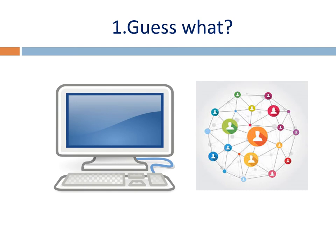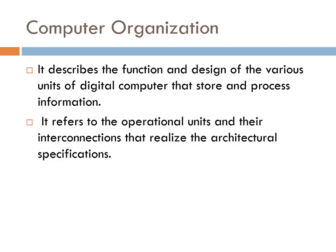Can you guess this? This is a computer and here is like an organization — this picture indicates an organization. So this is computer organization. Computer organization describes the function and design of various units of a digital computer that store and process information. It refers to the operational units and their interconnections that realize the architectural specifications.